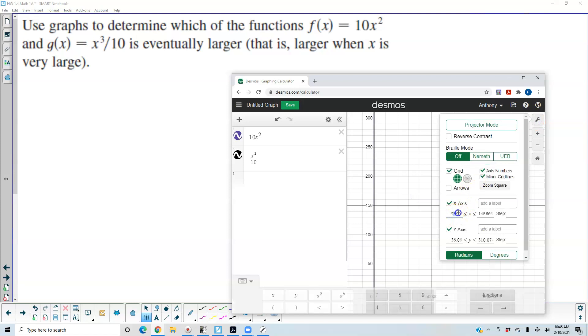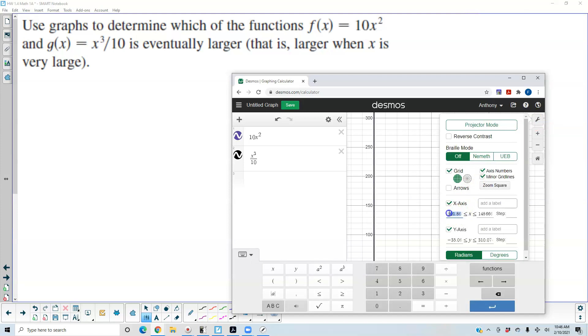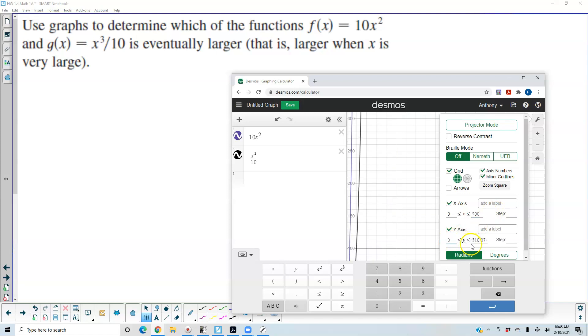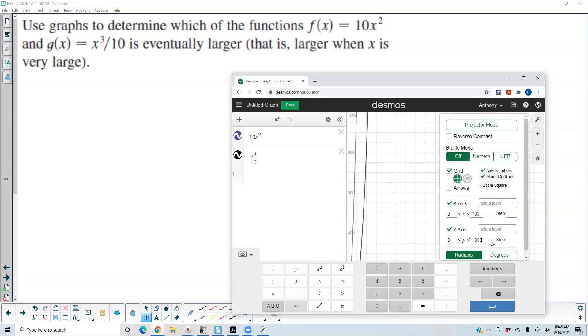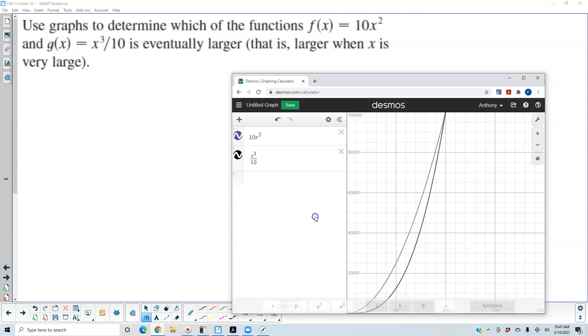So let's make our x-axis go from 0 to 200. And then our y-value go from 0 to, let's say, 100,000. Well, now we're getting closer, because now we can see what's happening here.